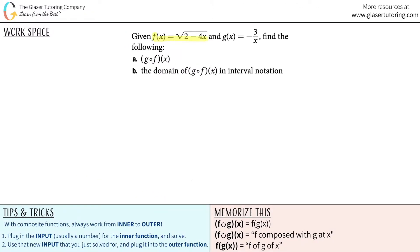Given f of x equals the square root of 2 minus 4x and g of x equals negative 3 over x, we need to find g composed with f at x and then the domain of g composed with f at x in interval notation.